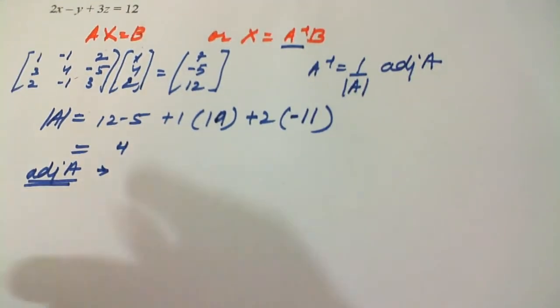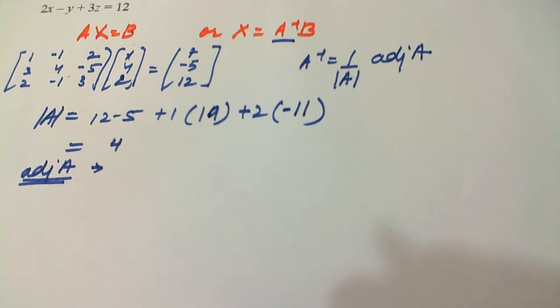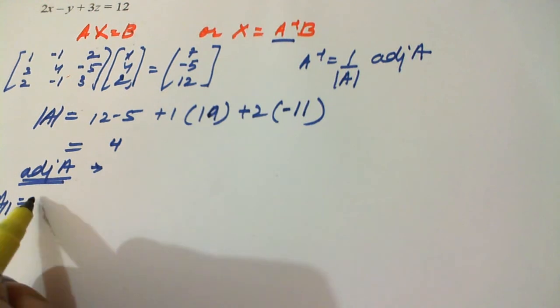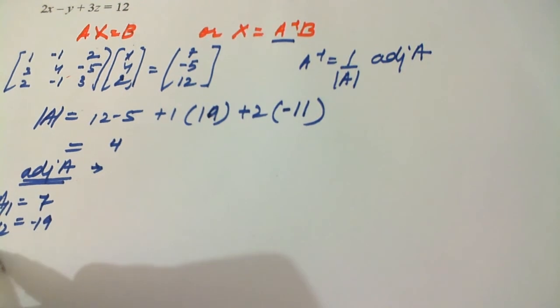This is not equal to 0, so the solution exists. Now finding adjoint A, for adjoint A you have to find the cofactors.